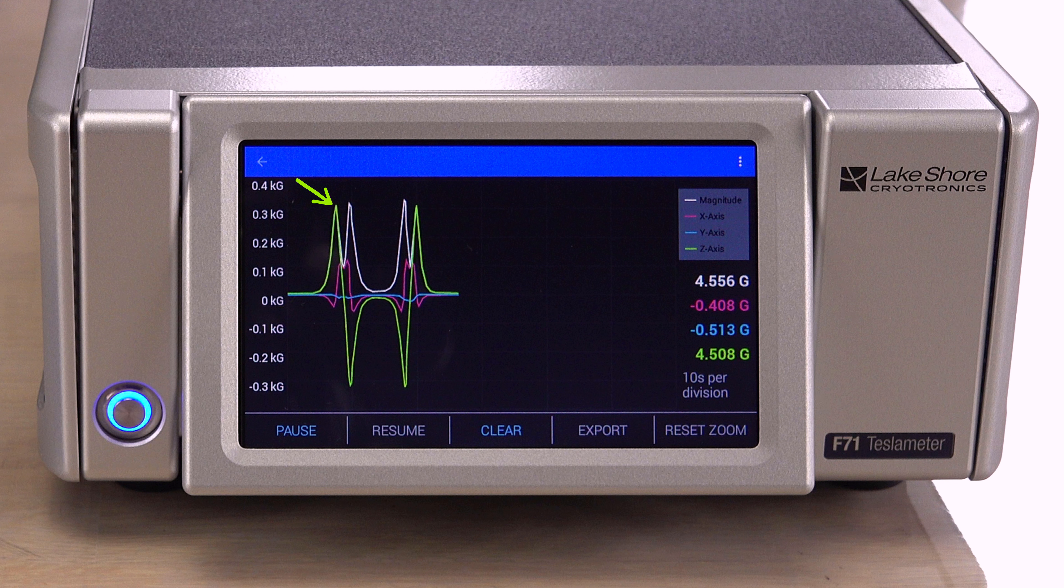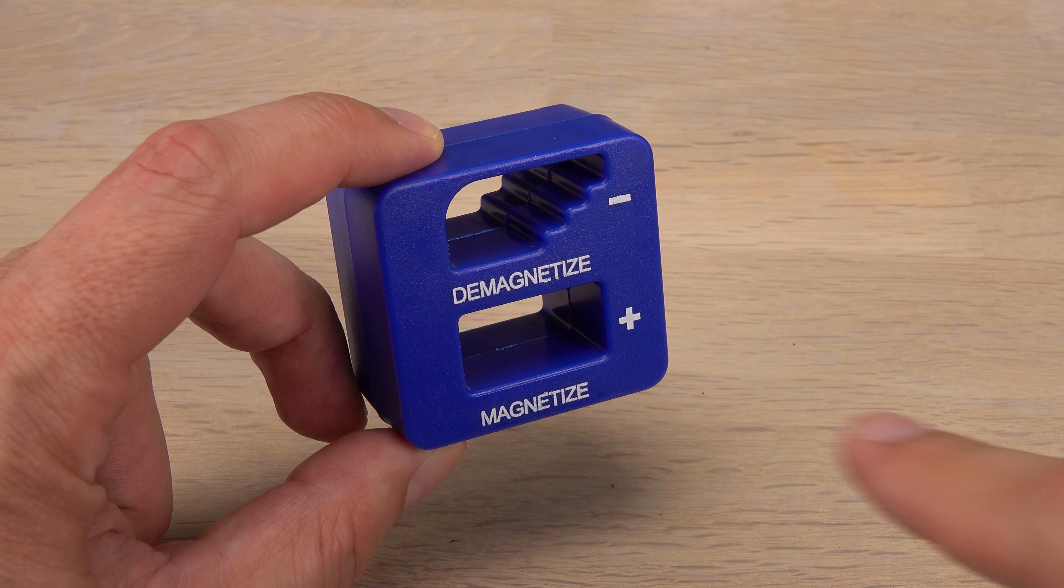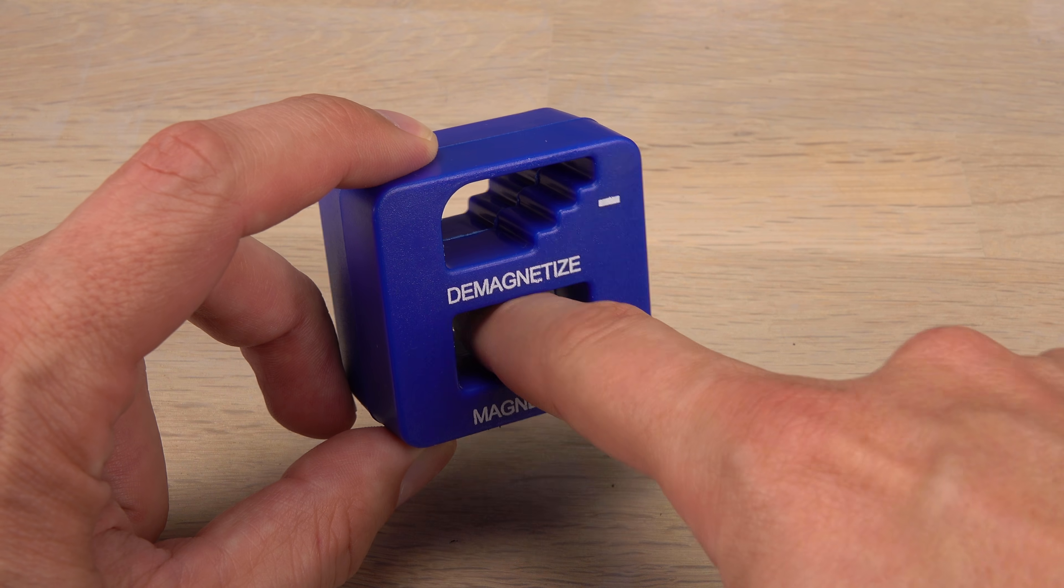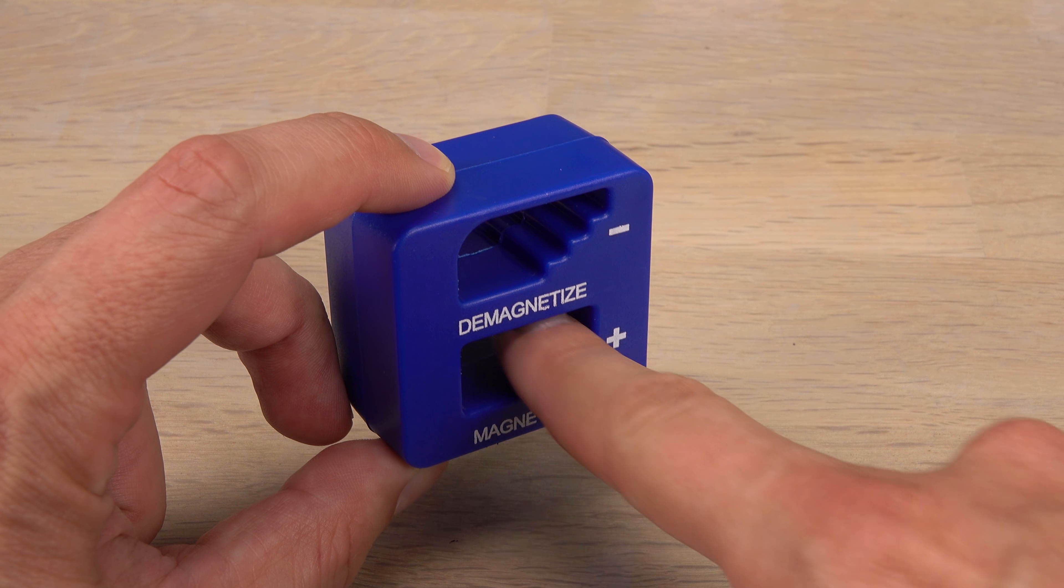Most important, the green z-axis running parallel with the probe is by far the strongest, making up most of the total magnetic field strength drawn as a white line. In other words, the direction of the magnetic field in the magnetizer is mostly horizontal, in and out of the opening.